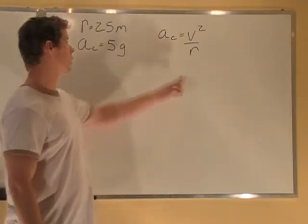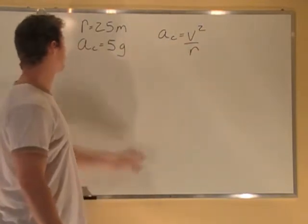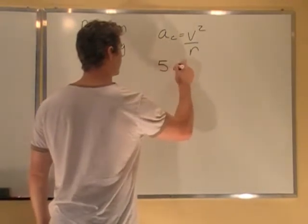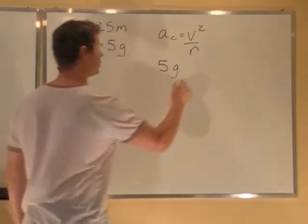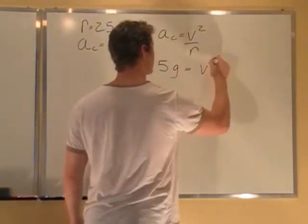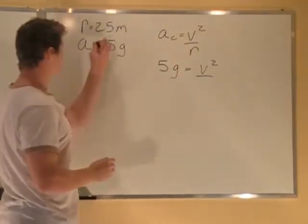We can figure it out right away, because all we need to do is figure out V. So the centripetal acceleration is 5 G, where G is our gravitational constant, V squared is unknown, and R, the radius, is 25 meters.